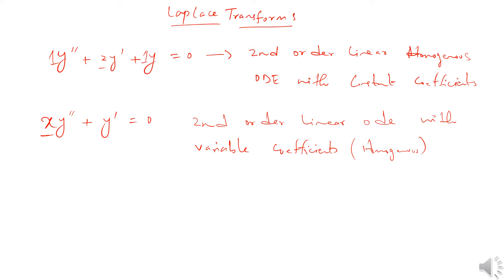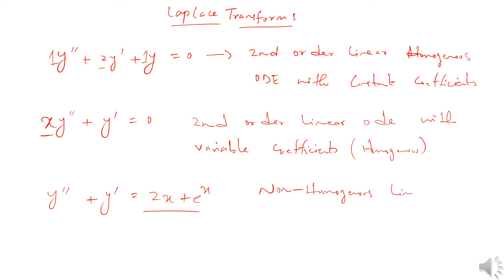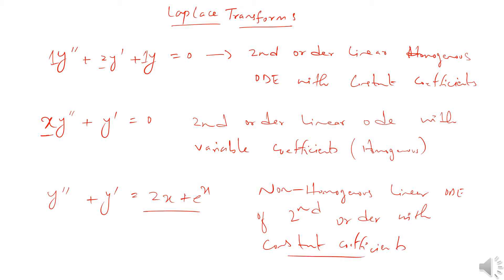An equation becomes non-homogeneous when there is some function of the independent variable on the right-hand side. For example, y'' + y' = 2x + e^x makes it a non-homogeneous linear ODE of second order with constant coefficients, since the coefficients of the derivatives are still constants.